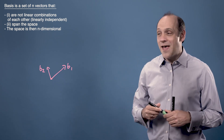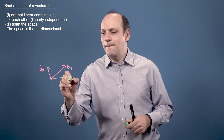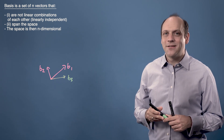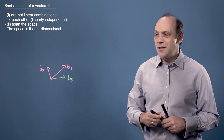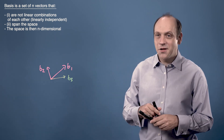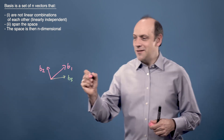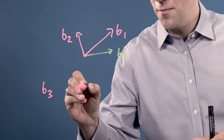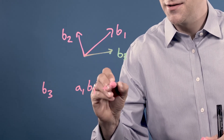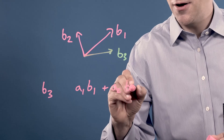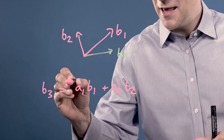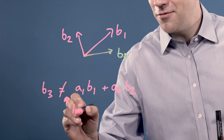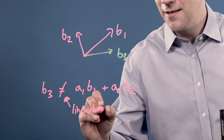Now, let's take a third vector B3. For B3 to be a valid third basis vector, it has to be impossible for me to find some numbers A1 and A2 such that I can satisfy this sum. So it has to be impossible for me to find B3 as some combination of B1 and B2, where A1 and A2 are just numbers. That has to be impossible. And if it is impossible, B3 is a third basis vector and B3 is linearly independent.